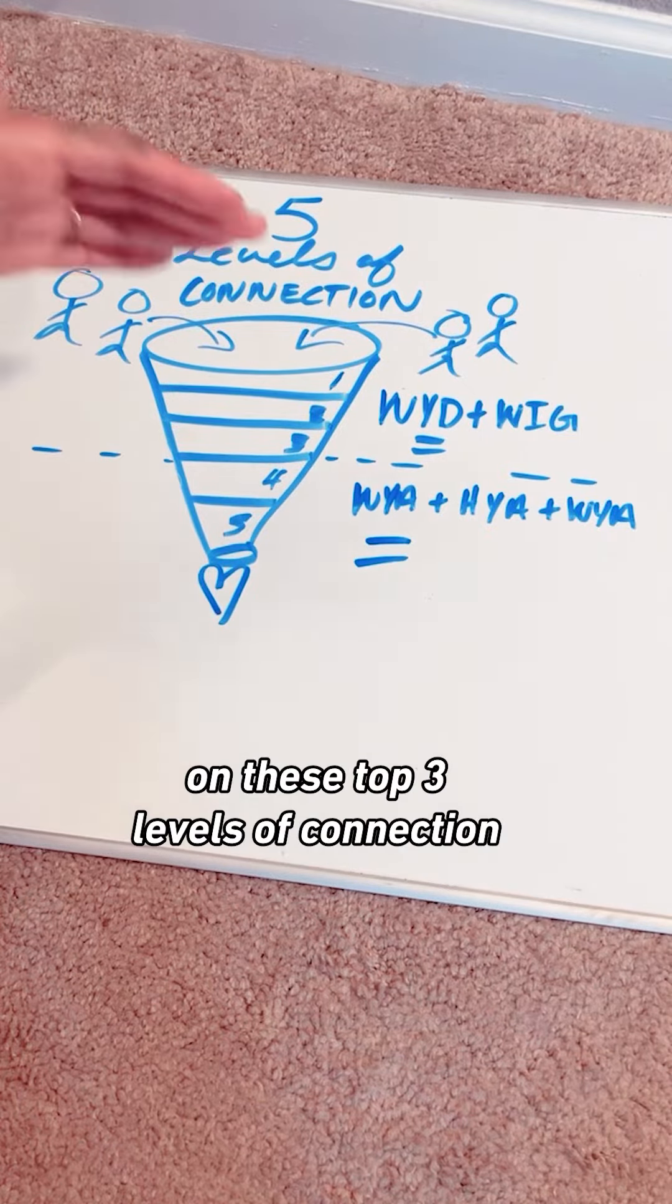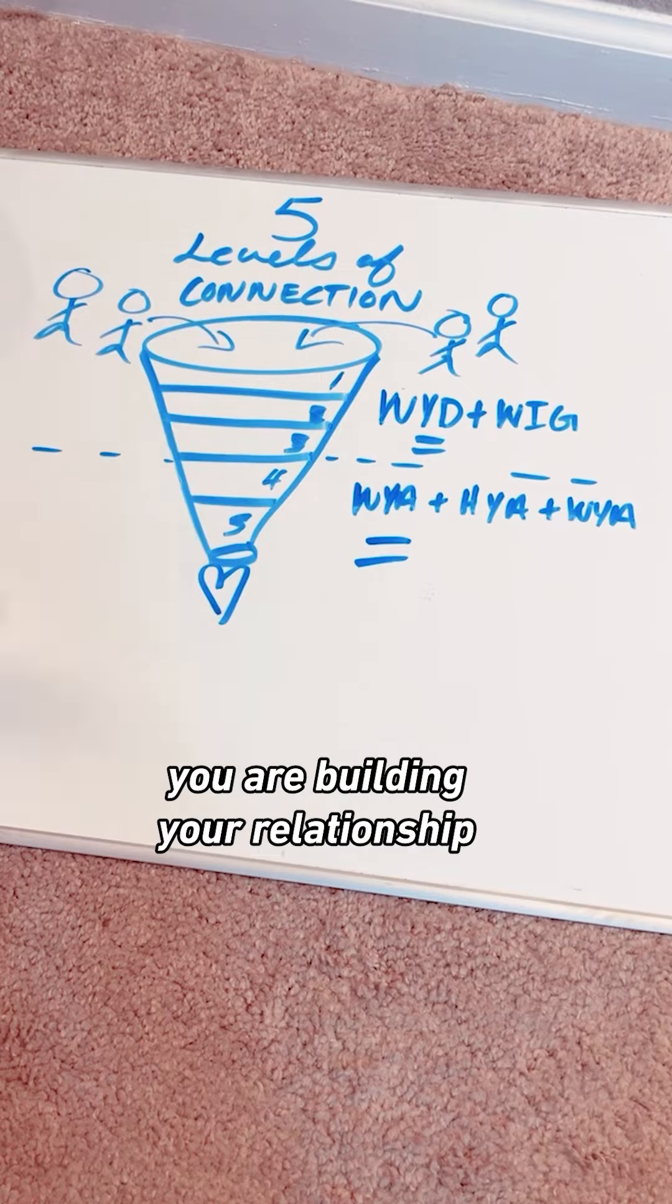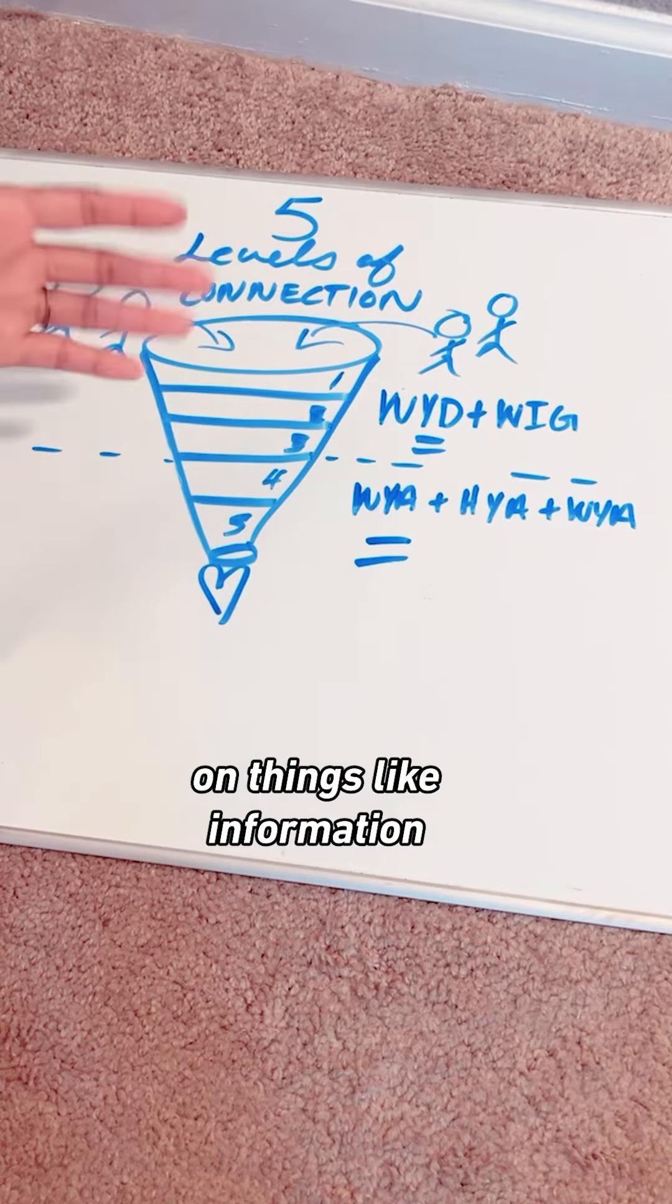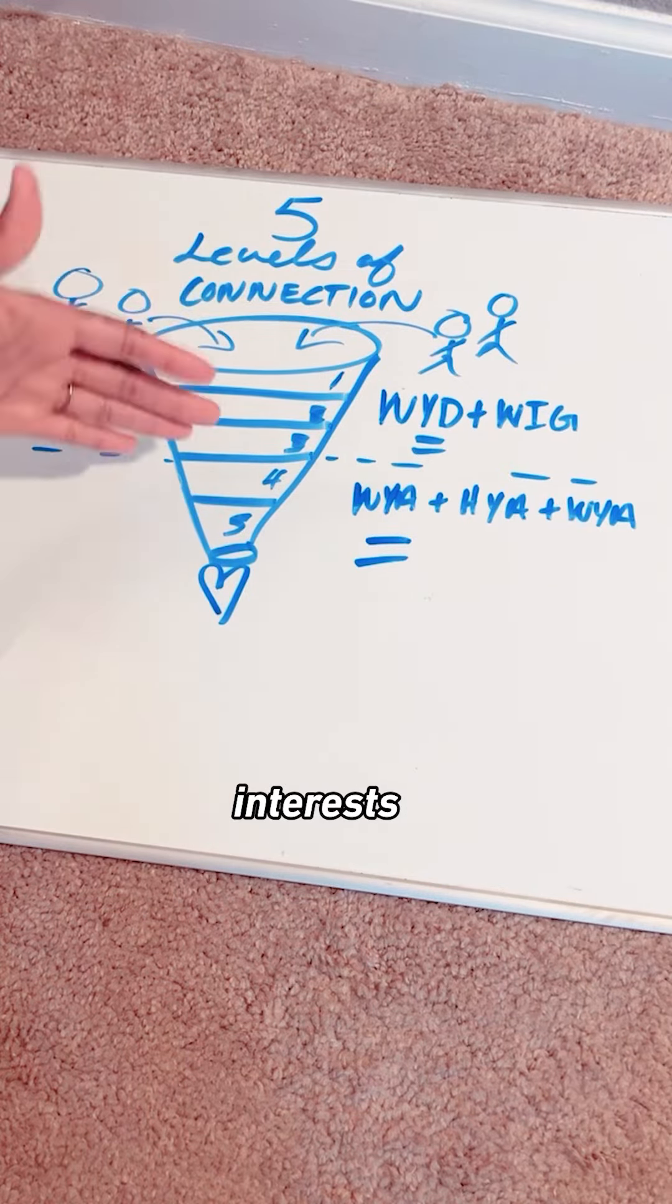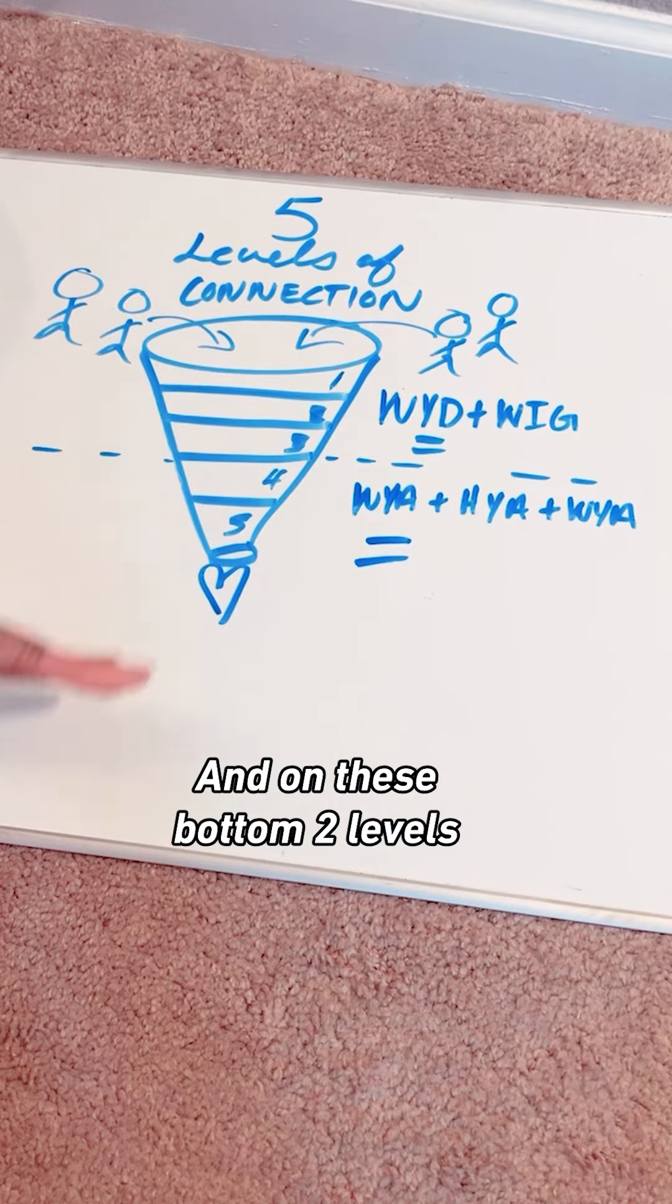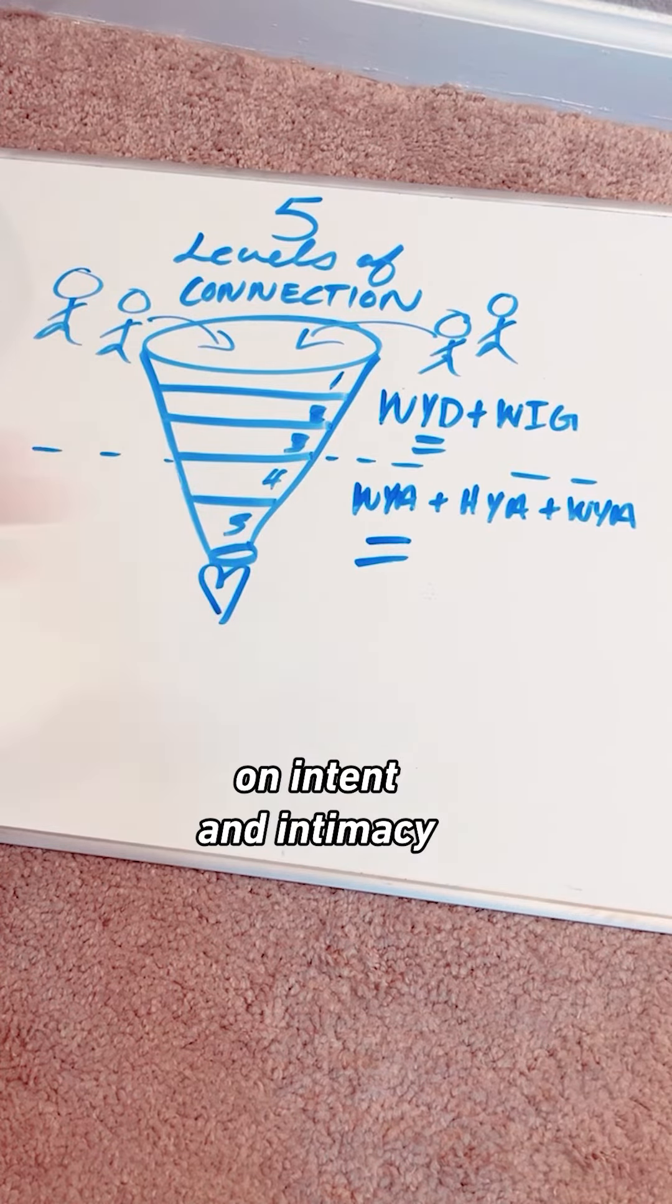On these top three levels of connection, you are building your relationship on things like information, investments, interest. And on these bottom two levels, you're building your relationships on intent and intimacy.